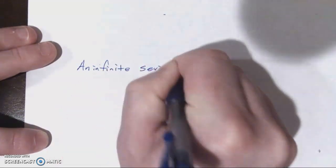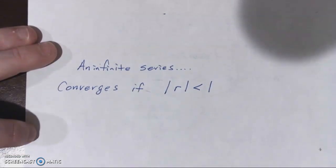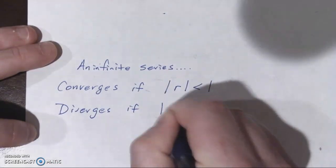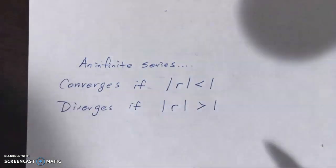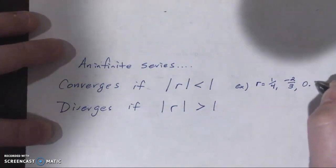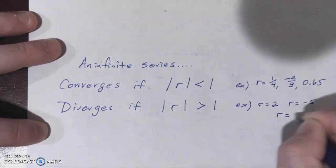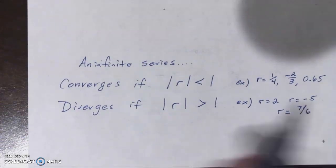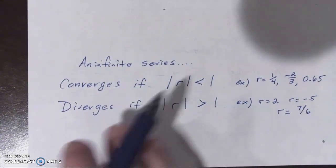An infinite series converges if the absolute value of r is less than 1. It diverges if the absolute value of r is greater than 1. We use absolute value to handle negative common ratios. So things like r equals one-fourth, r equals negative two-thirds, or r equals 0.65 would converge. A series diverges if r is 2, negative 5, or seven over six. The common ratio alone tells you whether a series converges or diverges, and if it converges, you find the sum with a formula.